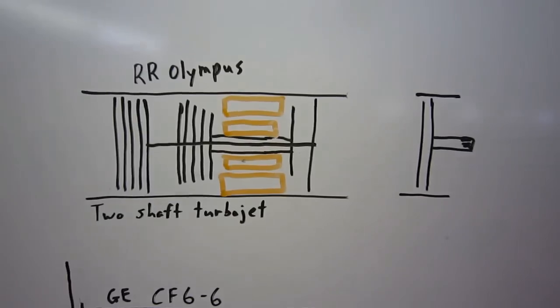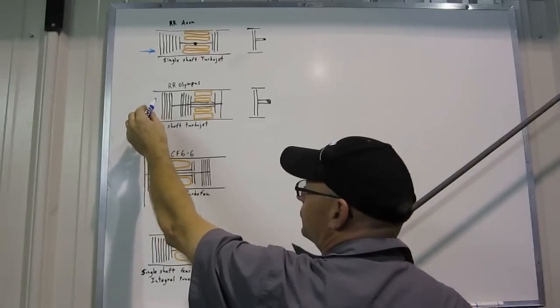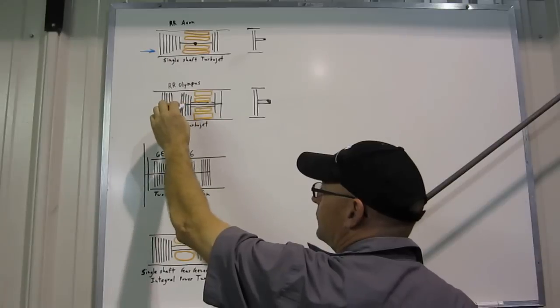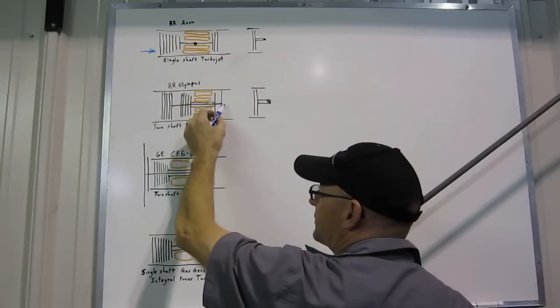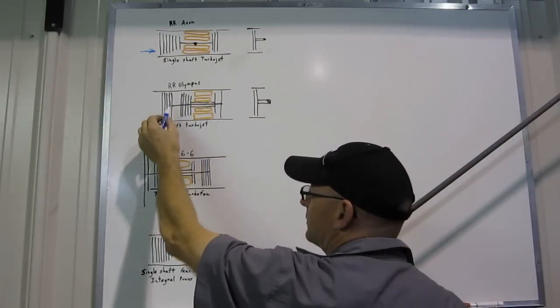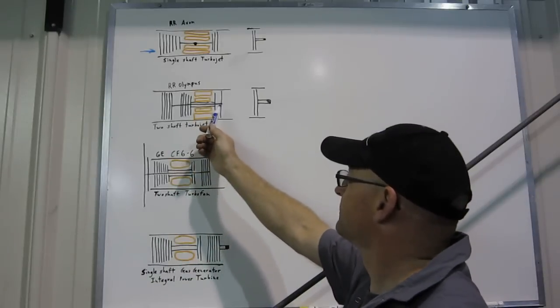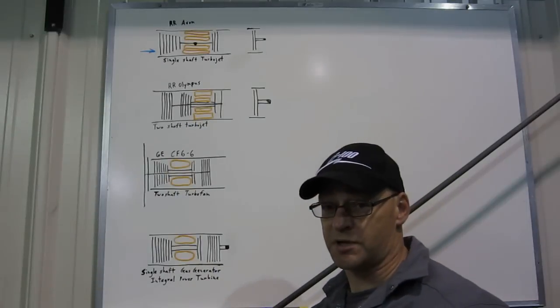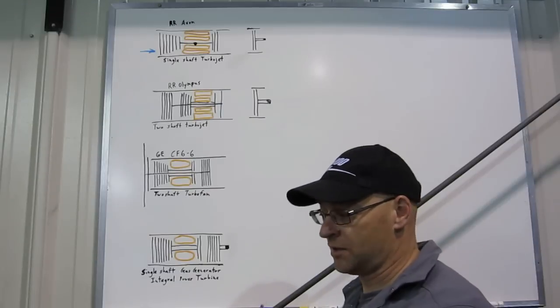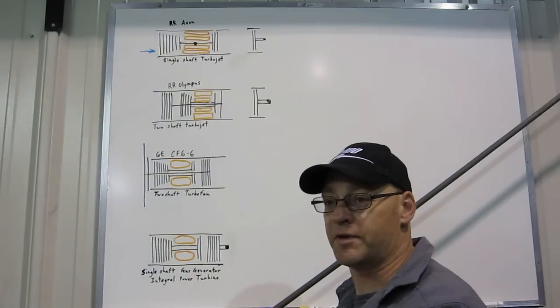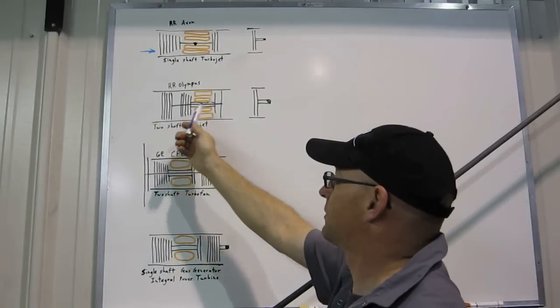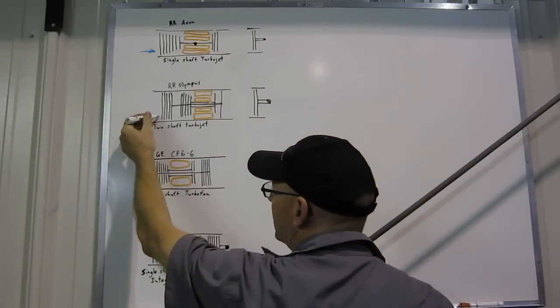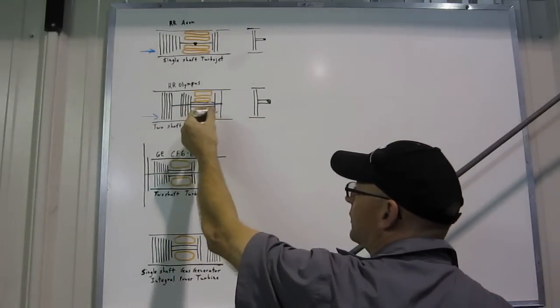This is the Rolls-Royce Olympus, which has a high-pressure compressor and high-pressure turbine, which is hollow, and a shaft passing through it for the low-pressure turbine, which drives the low-pressure compressor. Now this engine would run by itself just with the core or the high-pressure system. You could think of the low-pressure system as almost like a turbocharger for a jet engine. All of the air going into the intake goes all the way through the engine, is burnt, and comes out.